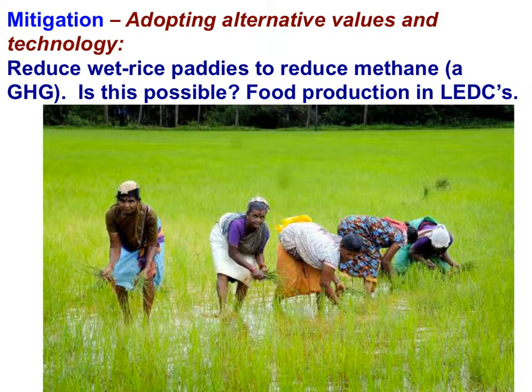A mitigation strategy to reduce the causes of climate change would be to reduce wet rice cultivation, to reduce the release of methane into the atmosphere. Is this possible? What would be the implications for food production in less economically developed countries?